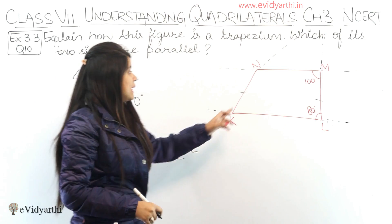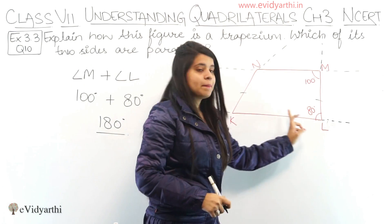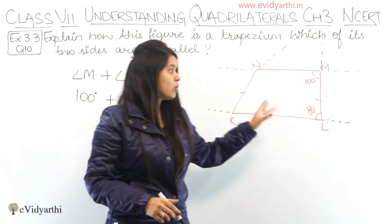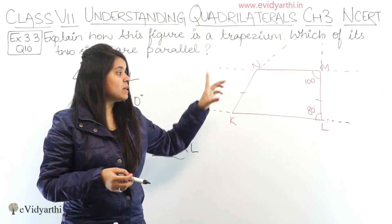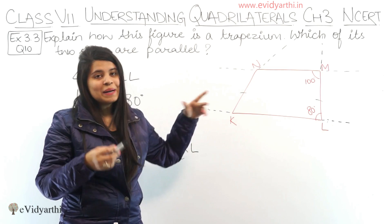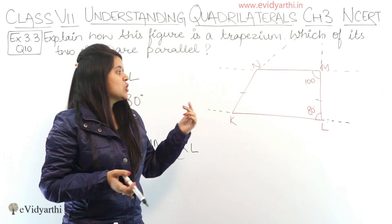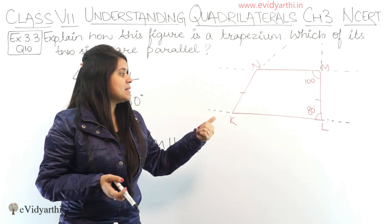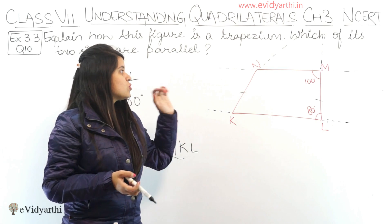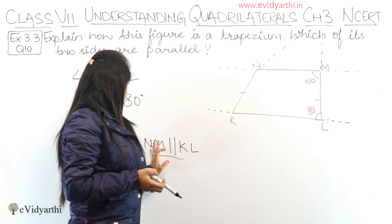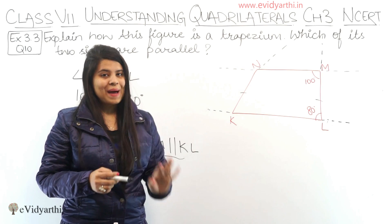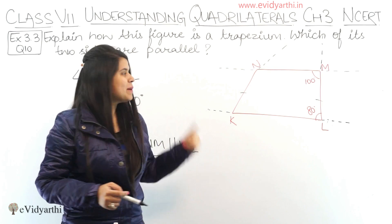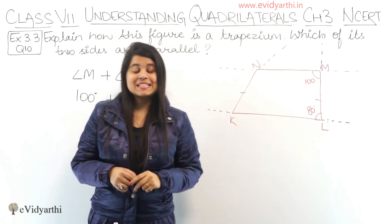So we have shown how NM and KL are parallel. We know that in a trapezium, two sides are parallel. So this figure is a trapezium, and NM and KL are the two parallel sides. So this was question number 10.